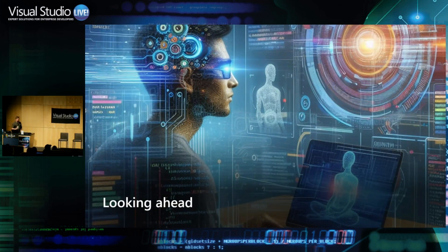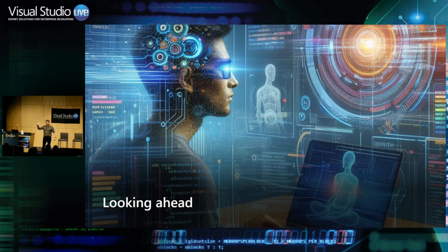By the way, all these images are Bing-generated AI images. There is one picture where there's a lady who's got three arms — I won't tell you which one, you'll have to find it.